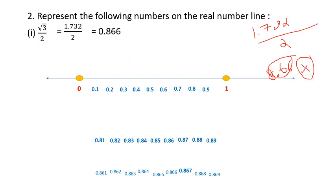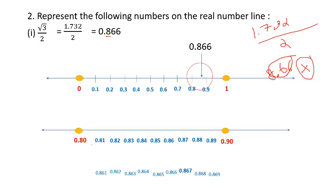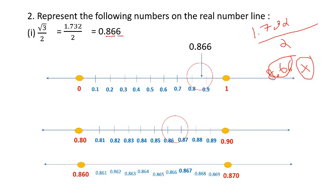To represent 0.866 on the number line, draw from 0 to 1. Find 0.8 - it lies here. Zoom in between 0.8 and 0.9: find 0.86, which is between 0.86 and 0.87. Zoom in again to three decimal places: 0.866 is right here. Hence 0.866 is your answer.